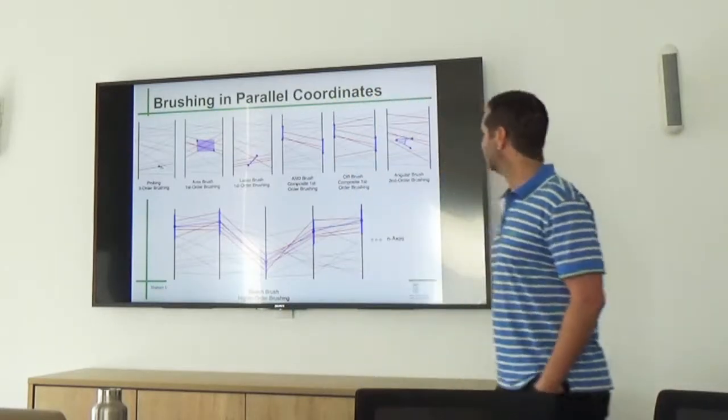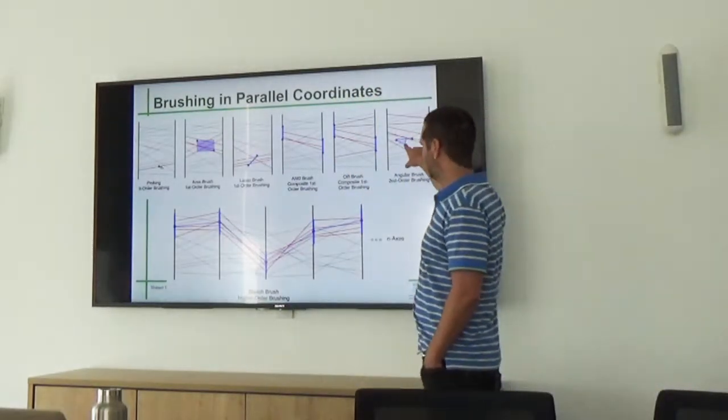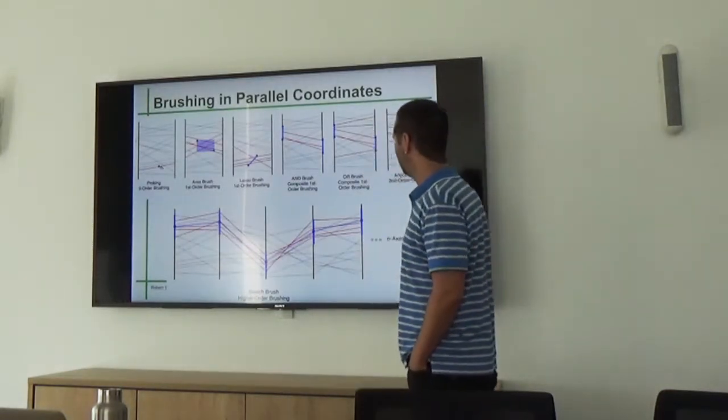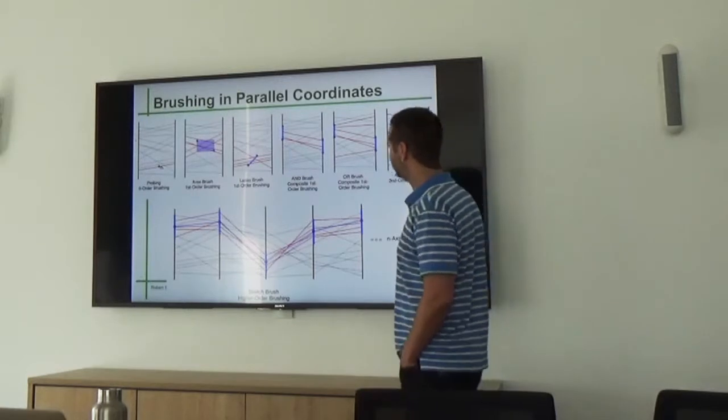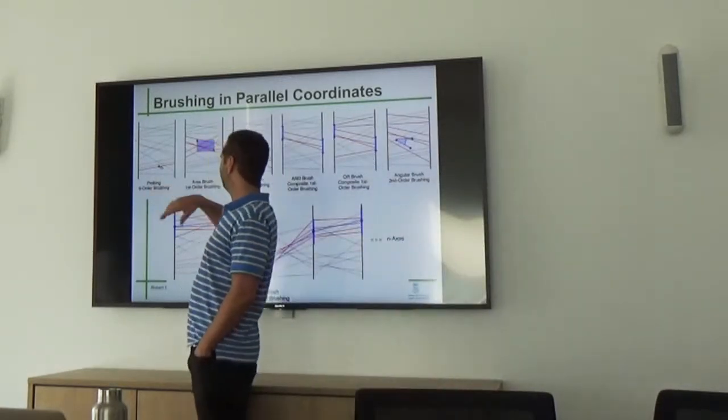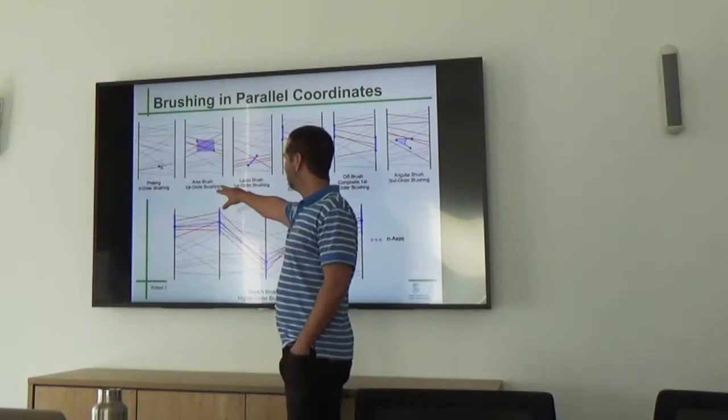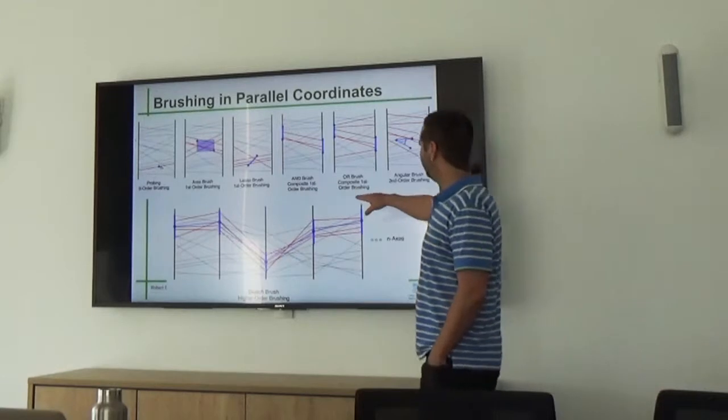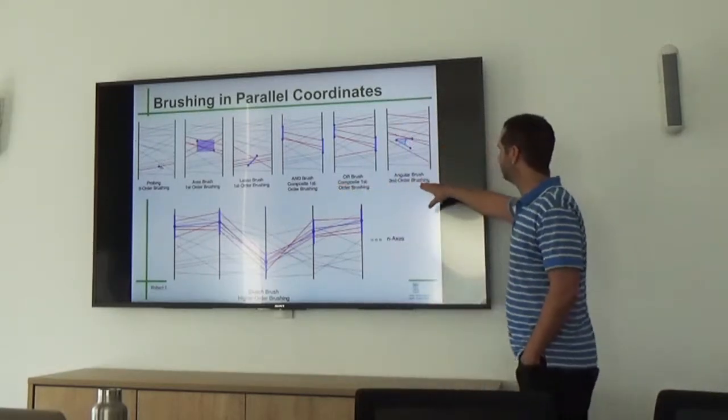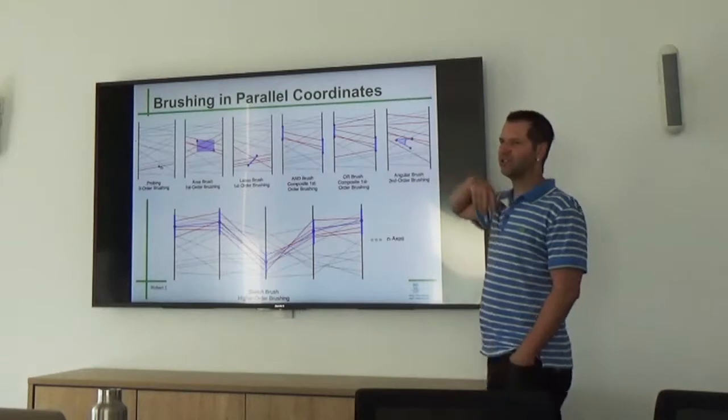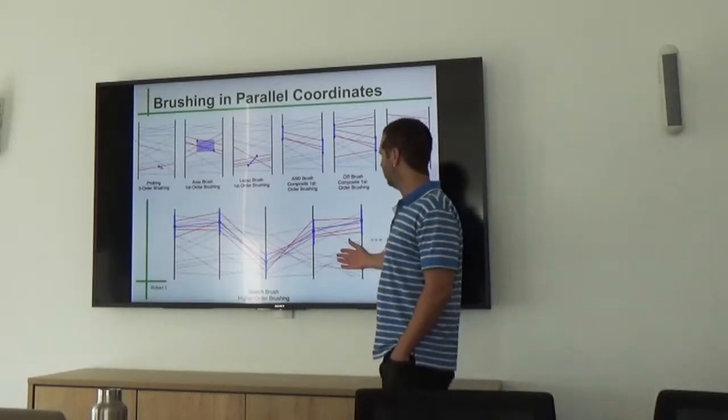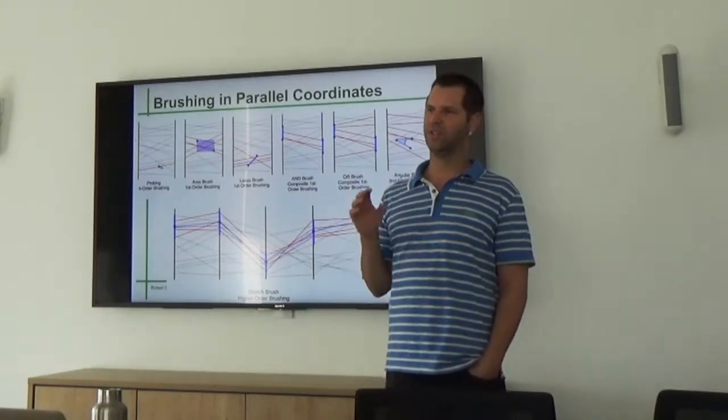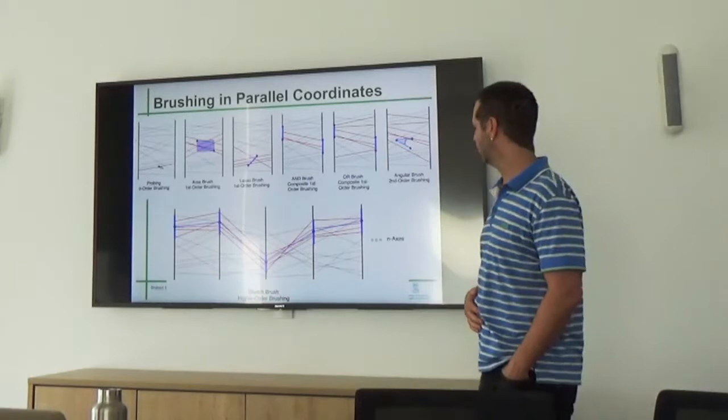And that's what it looks like. So when we extend this concept to an arbitrary number of axes and an arbitrary number of points, we call it higher-order brushing. We call brushing based on a single point zero-order brushing. Brushing based on two points, first-order brushing. Then we have composite first-order brushing and second-order brushing, which is the angular brushing. What we introduce, essentially, is higher-order brushing and then several enhancements to the basic higher-order brushing concept.